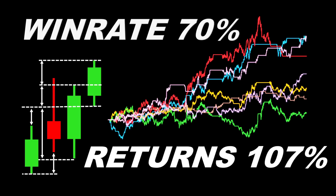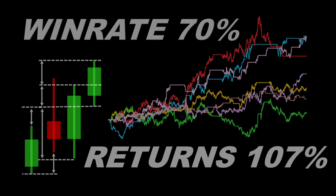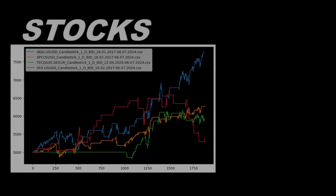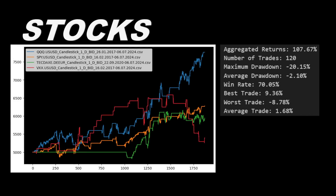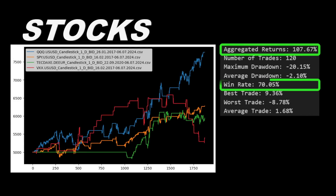Today's strategy uses a very simple candlestick pattern and it performed extremely well in the backtest, yielding 107% in returns and a win rate of 70%. I back-tested this strategy on some stocks like the Triple Q, the S&P 500, and the DAX. Although these results are actually good, to me they are not really impressive, and I will tell you why.